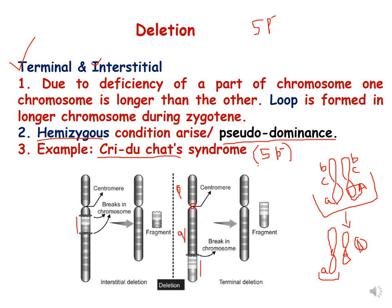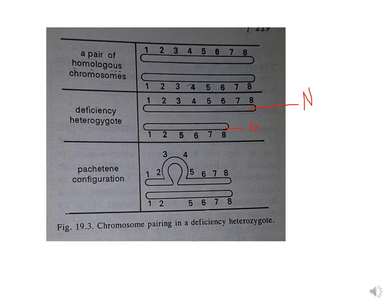In this line diagram you can see a shorter and a longer chromosome as a result of deletion. Because one chromosome becomes longer and one becomes shorter due to deletion, this is a deficiency heterozygote. To enable bivalent formation, the longer chromosome undergoes loop formation. Here N means normal and D means deleted.